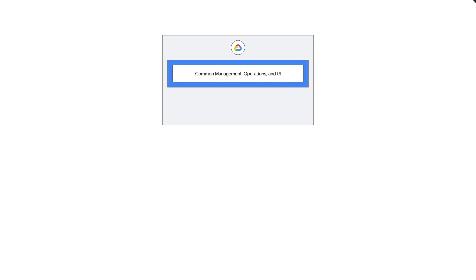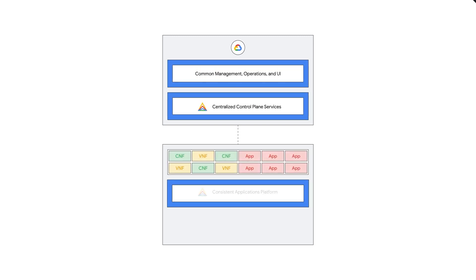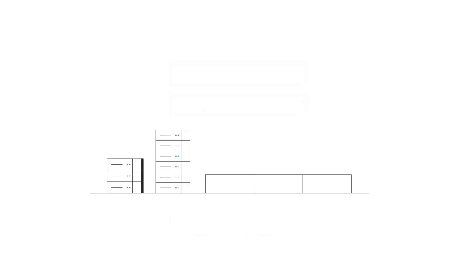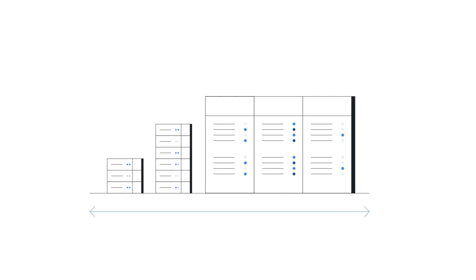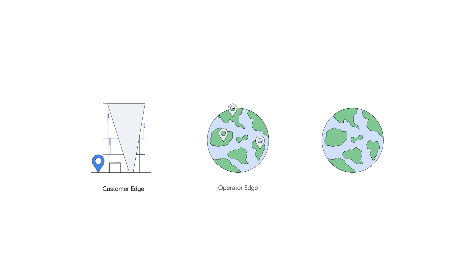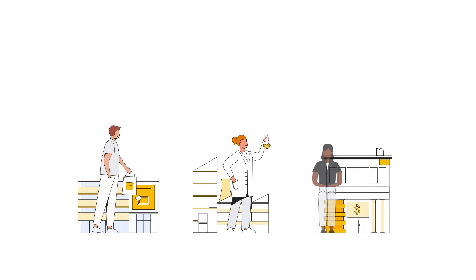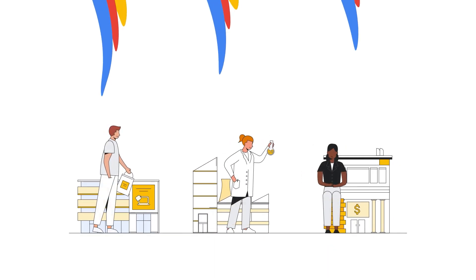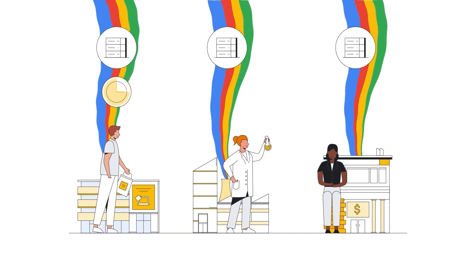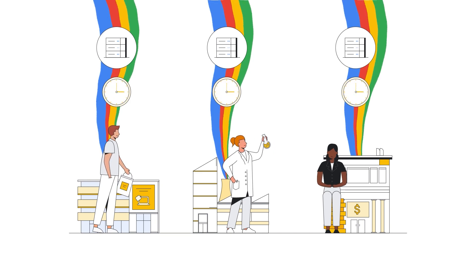GDC Edge is a fully managed hardware and software solution designed for low latency and hybrid workloads. Available in both appliance and scalable server rack form factors, GDC Edge is deployable at customer edge, operator edge, and Google Cloud edge locations. It brings Google Cloud's infrastructure and services closer to where data is being generated and consumed, building on the capabilities of core data centers and dramatically reducing time to value for new enterprise and communications service provider applications at the edge.